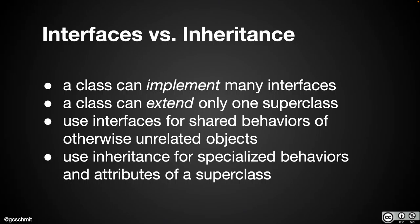Being able to compare two objects of the same class is useful, but that's something many different classes would want to do — not just one specific class. So that's a shared behavior needed by otherwise unrelated objects. We might want to compare values in a Person class, a Coin class, and a BankAccount class — those are unrelated classes, but they have the shared behavior of wanting to be comparable. We use inheritance for specialized behaviors and attributes of the superclass, like the FillInQuestion class or the ATMCard class. That's when we use one over the other.